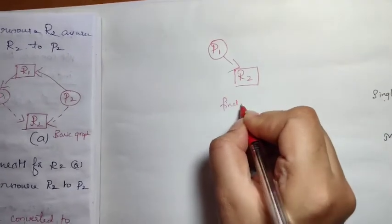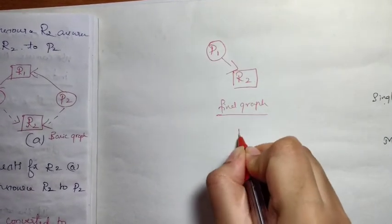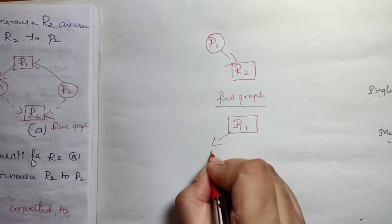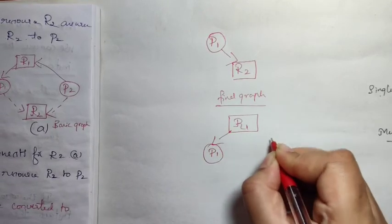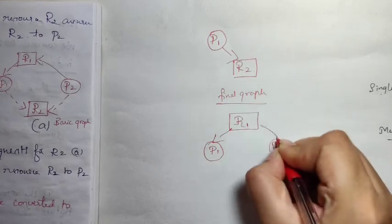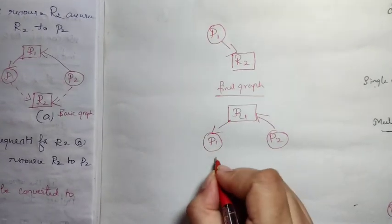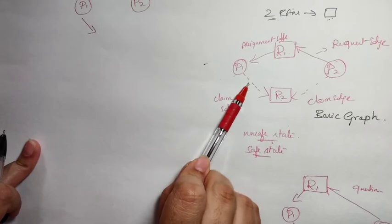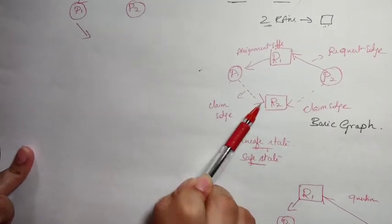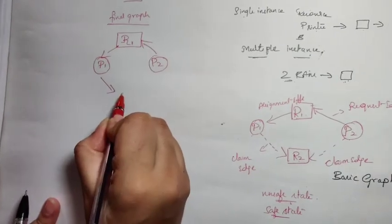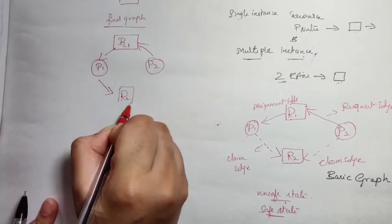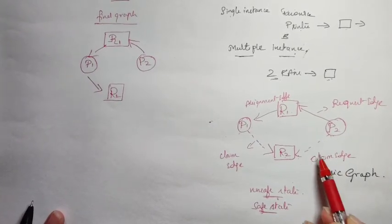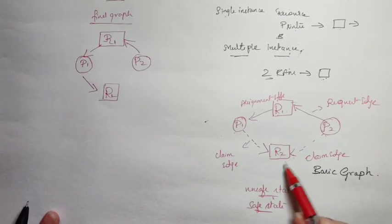The final graph looks like this: R1 and P1 remain, P2 remains. The claim edge from P1 to R2 is converted into a request edge, and the allocation edge from R2 to P2 is also updated accordingly. The graph now shows the updated state with all edges reflected.